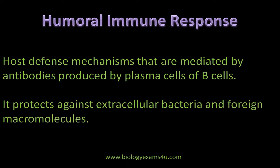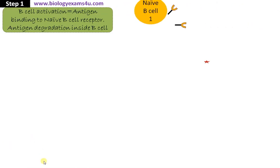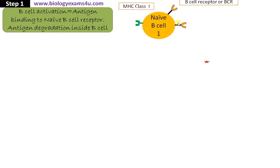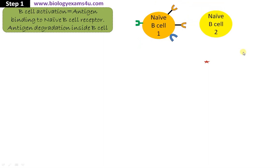Moving into the detail: Step 1 is B cell activation. This is a naive B cell — it is having a B cell receptor. A naive B cell is a B cell that hasn't encountered an antigen before. This B cell is a nucleated cell; it is having MHC class 1 receptor and it is also having MHC class 2 receptor, as this B cell is also an antigen presenting cell.